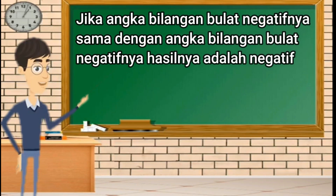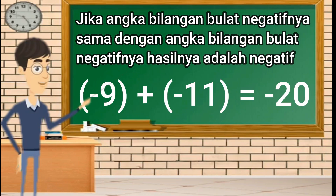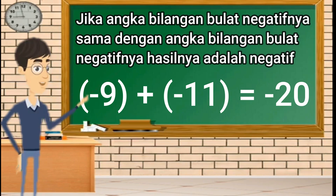Jika angka bilangan bulat negatifnya sama dengan angka bilangan bulat negatifnya, hasilnya adalah negatif. Contoh: negatif 9 ditambah negatif 11 sama dengan negatif 20, karena negatif ditambah dengan negatif hasilnya juga akan menjadi negatif.